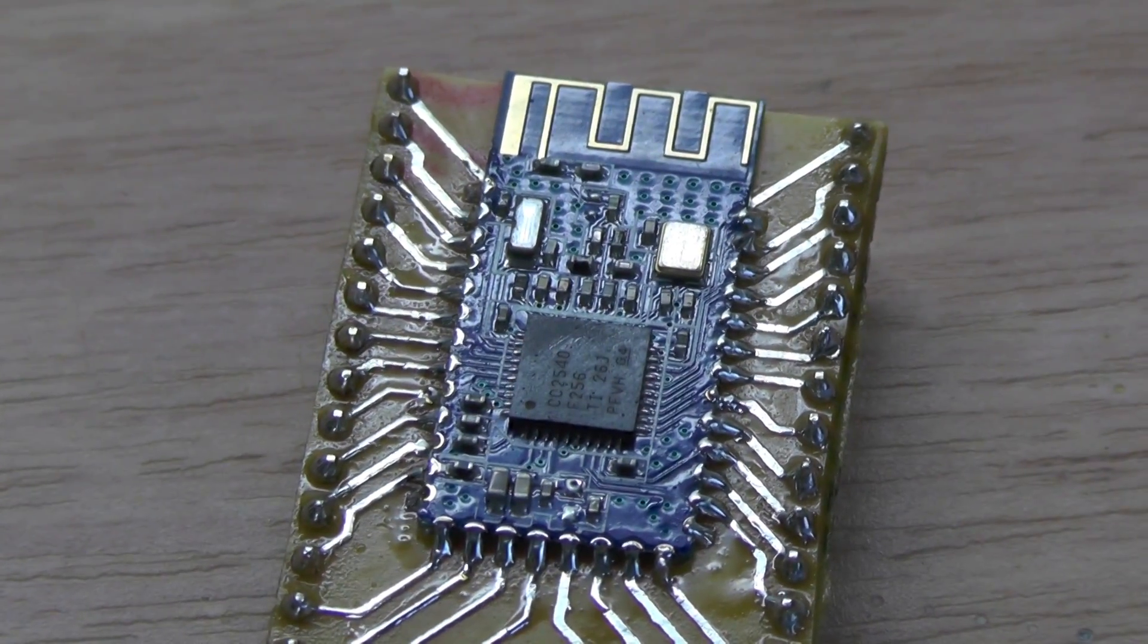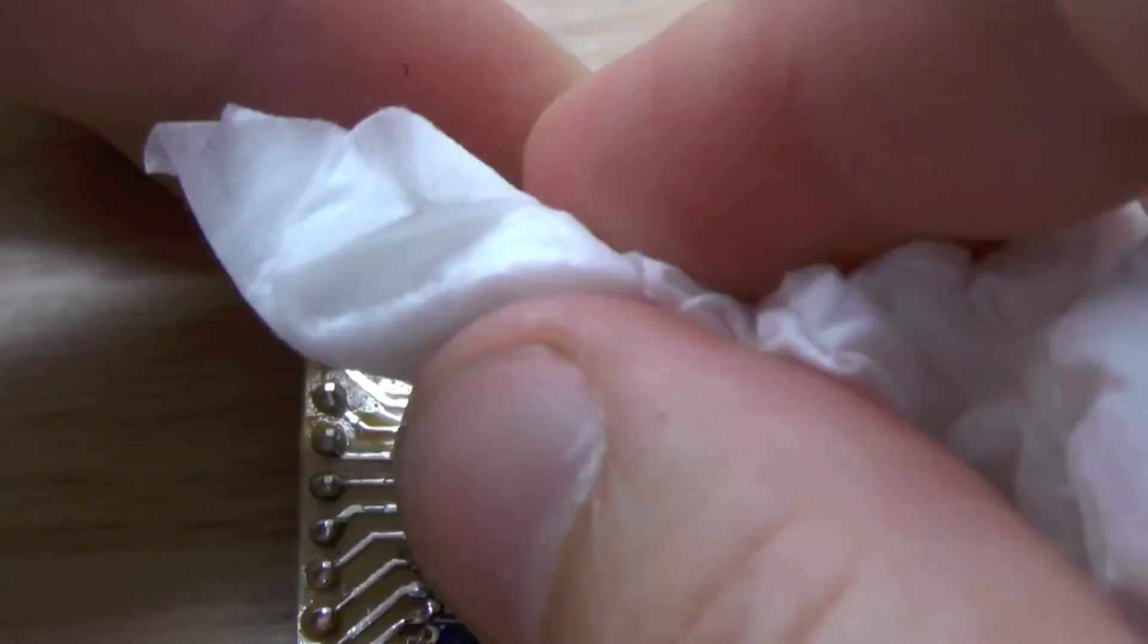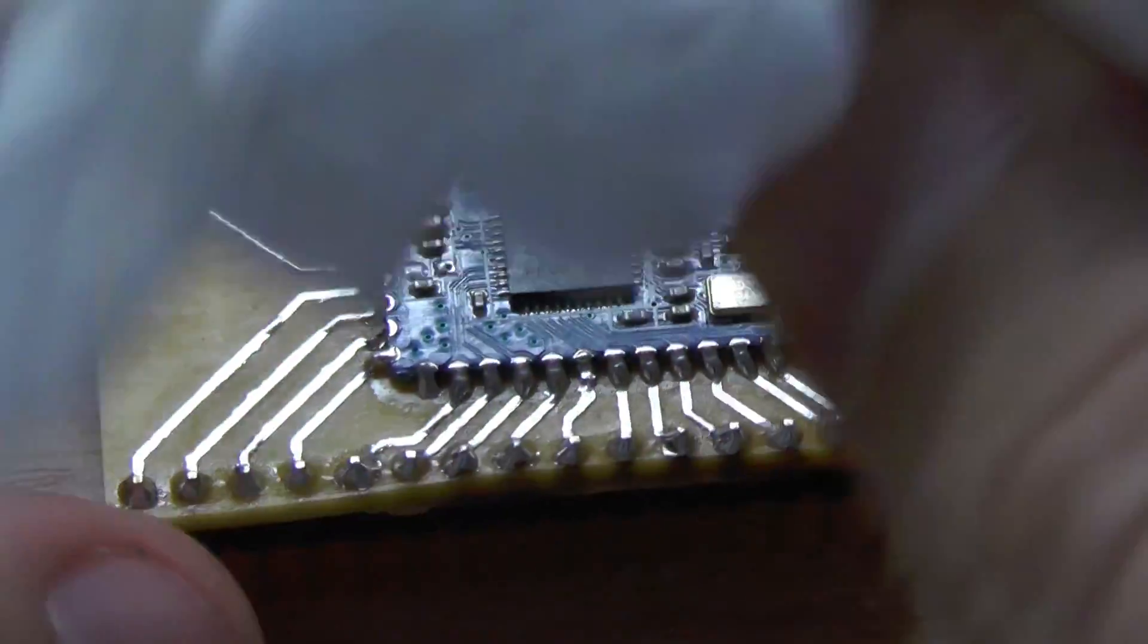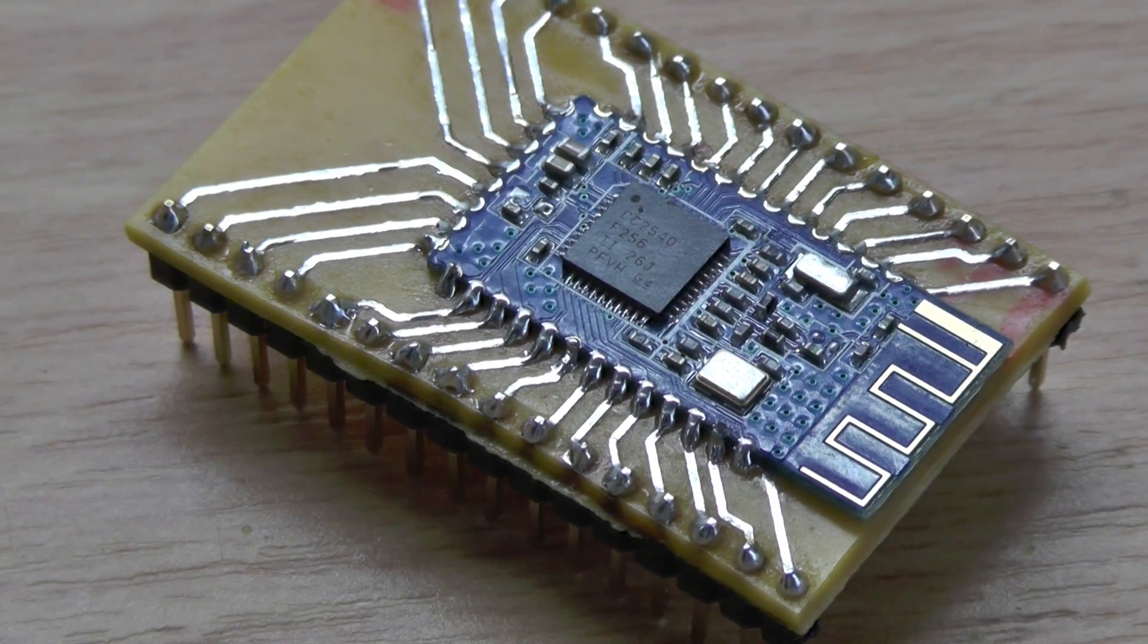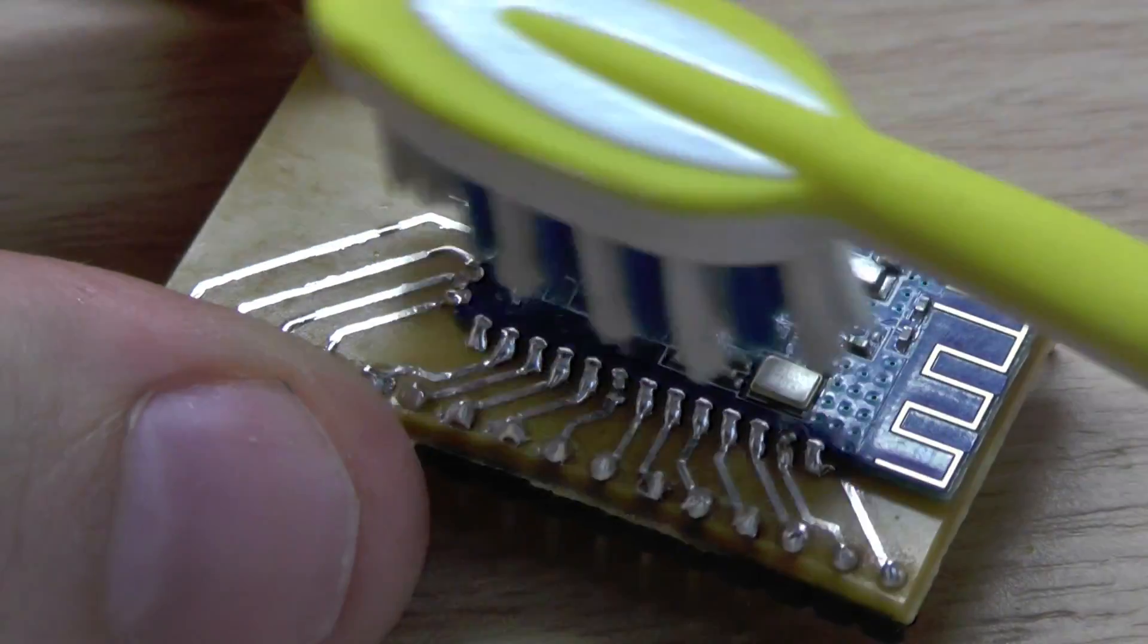I remove it again from the remaining solder fat. To get to all the corners I use this toothbrush with some alcohol.